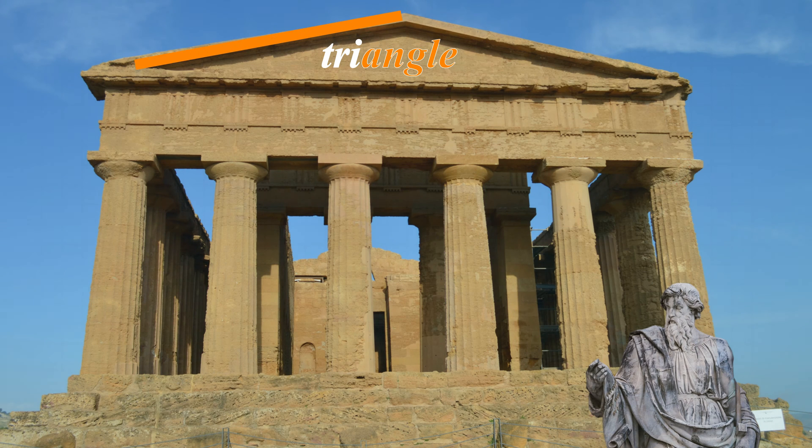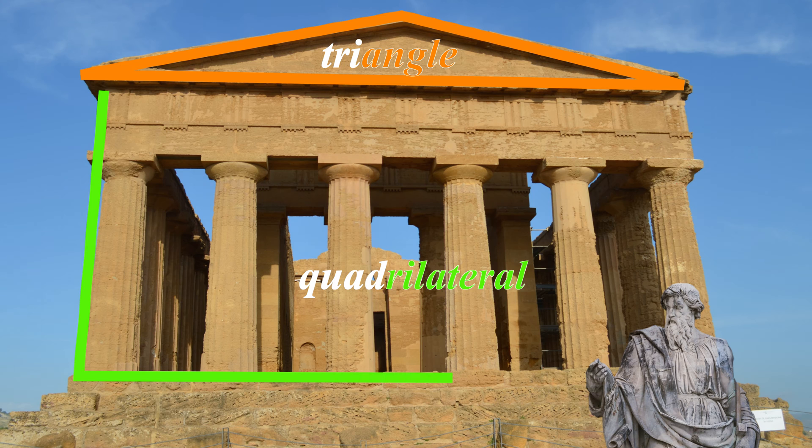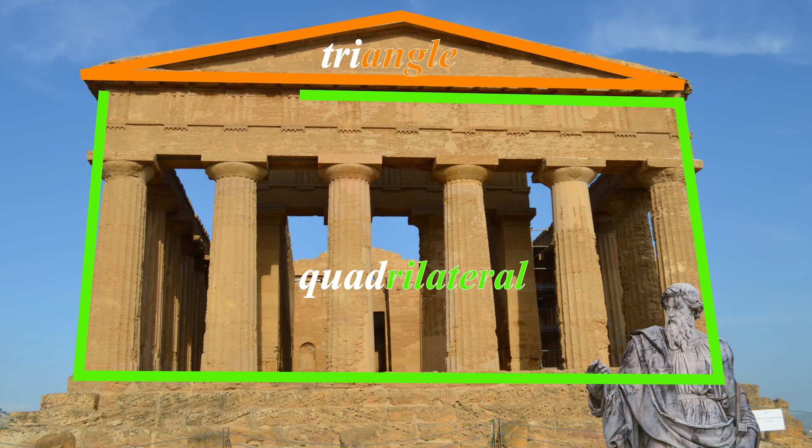Tri means three, so triangles have three sides and three angles. Quad means four and lateral means a side, so quadrilaterals have four sides and four angles.